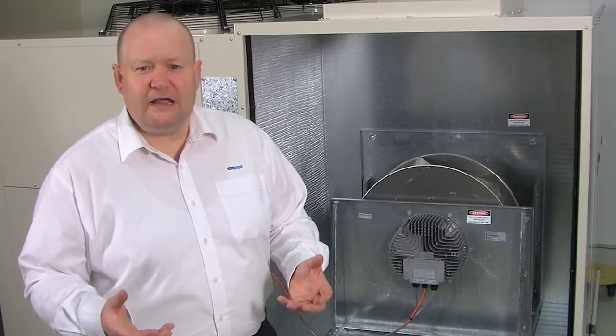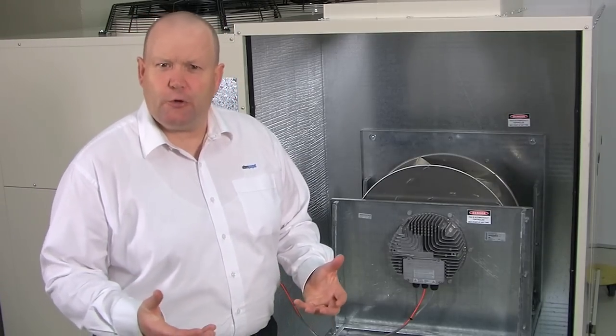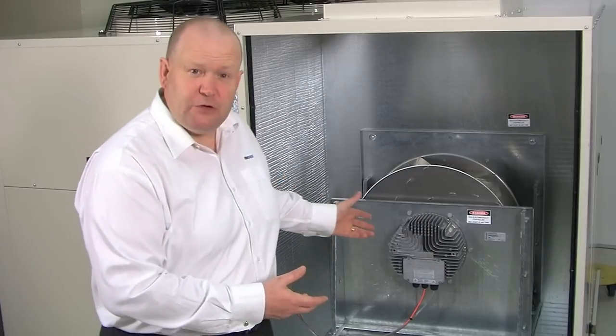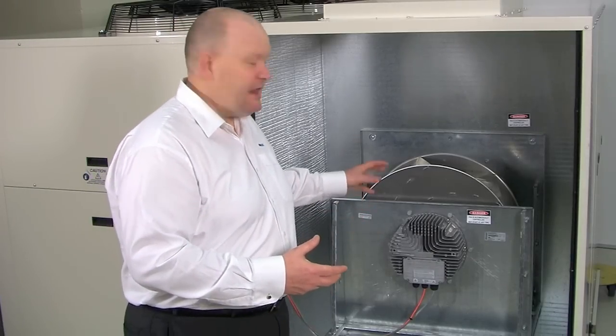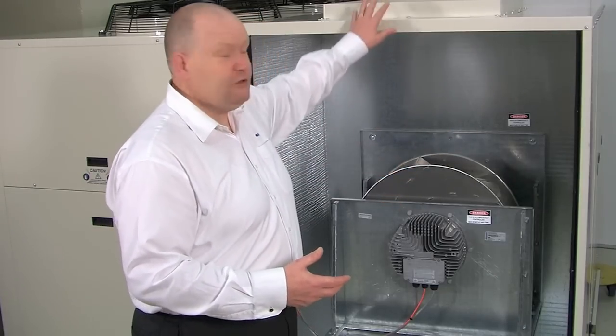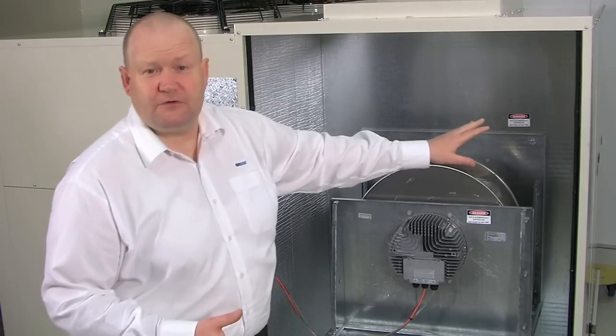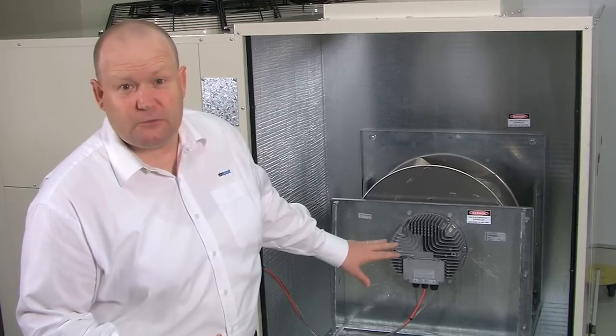A plug fan is a backward curved centrifugal fan without a scroll, and you can see here from the unit how the plug fan positively pressurizes the whole of this plenum. This unit actually has the air ducted from the ceiling, but it also could be ducted from the side or the bottom quite easily.